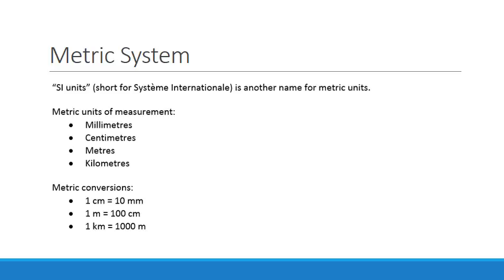And metric conversions, your science teacher will kick your butt if you don't remember these, but one centimeter is equal to 10 millimeters, one meter is 100 centimeters, and then one kilometer is 1,000 meters, and we can break those down further if we need to.